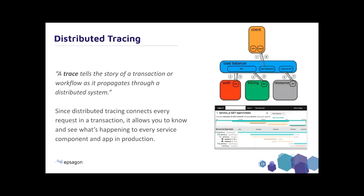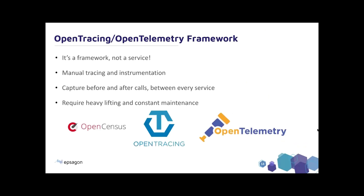At best, a request will travel through maybe a fraction of those services. Beyond this, distributed tracing becomes a fantastic way to start determining where in your stack time is being spent. If it's taking two seconds for a response, is that due to time being spent in a database query? Or is a service perhaps taxed on memory and unable to be as performant as we'd like? With distributed tracing, frameworks like Jaeger and Zipkin came about.